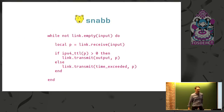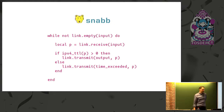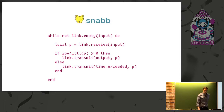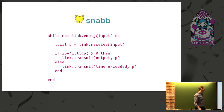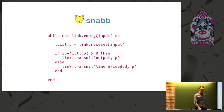Let me start by showing you some typical Snap code. Snap programs are divided into modules that we call apps, which have a number of input and output links, and they basically process packets in a loop. This example shows how to read packets while the input link is not empty, check if their time to live has expired, and if not, forward the packet to the output link. If the TTL has expired, we transmit the packet onto the time exceeded link, where it will be received by another app that handles ICMP, for example.